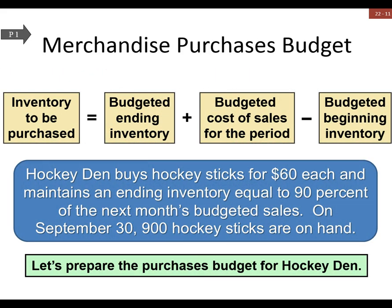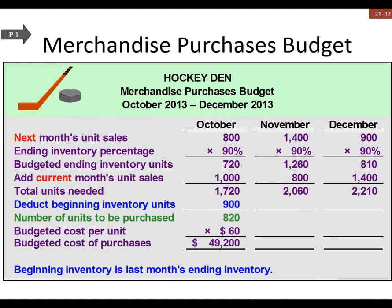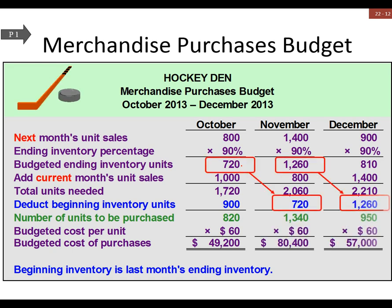Now for our merchandise purchases budget, this one is a little more complex. We're building off of assumptions we create. The key assumption is that the ending inventory percentage for a given month is going to be 90% of next month's sales.